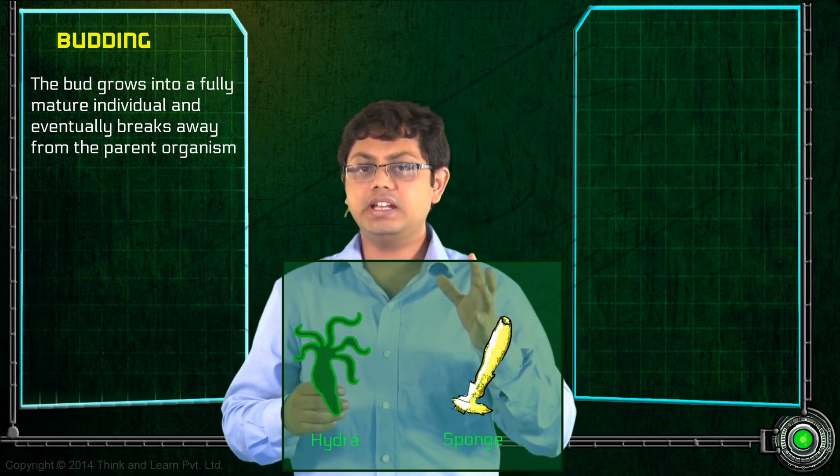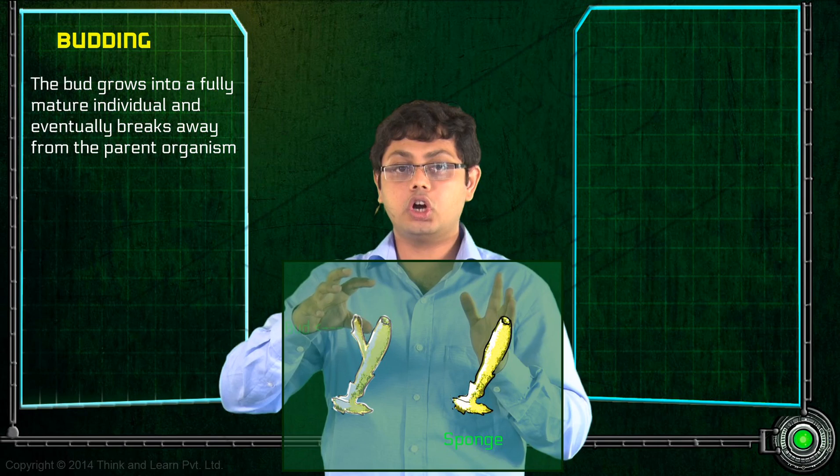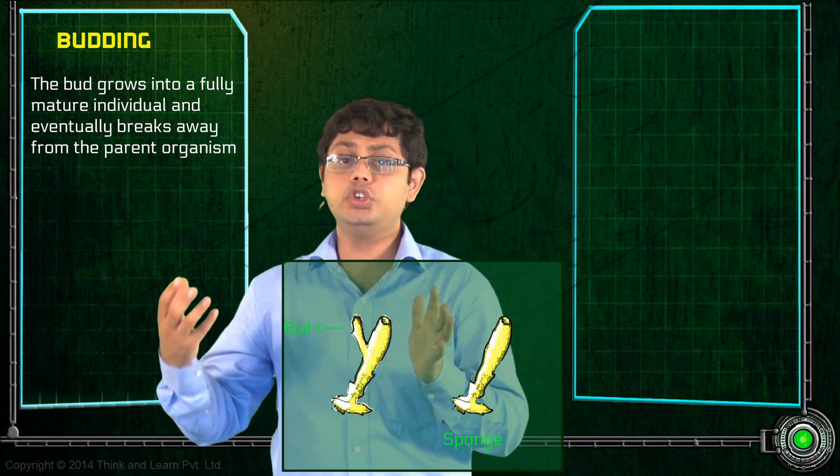What actually happens in a hydra or a sponge is that they develop an outgrowth or a bud, and the bud may detach from the parent and become a new individual.